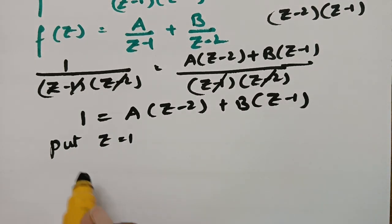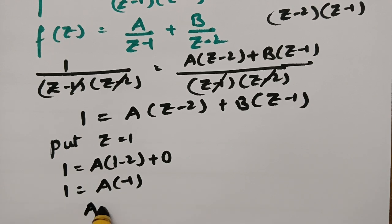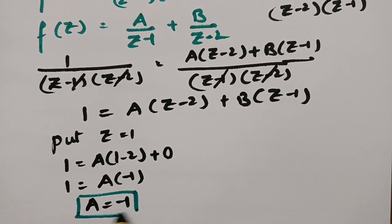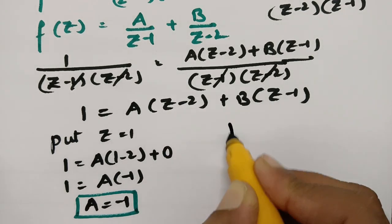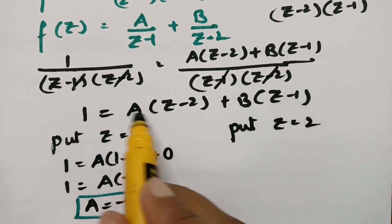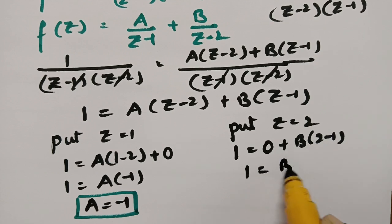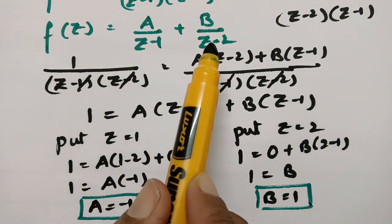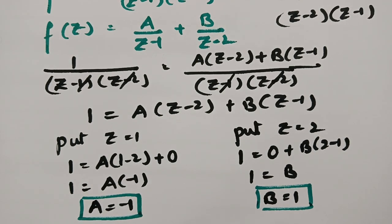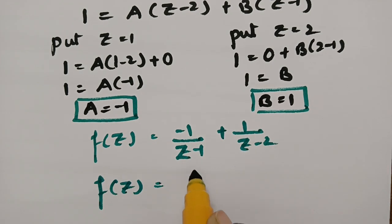Putting z = 1: 1 = A(1 - 2) + 0, so 1 = -A, giving A = -1. Putting z = 2: 1 = 0 + B(2 - 1), so B = 1. Substituting A = -1 and B = 1 back, f(z) = -1/(z - 1) + 1/(z - 2), which can be written as 1/(z - 2) - 1/(z - 1).